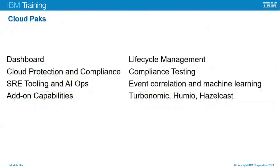The Cloud Pack for Multicloud Management is an IT management platform providing full visibility and control wherever workloads are running. Features include a dashboard to monitor application lifecycle and management, deploy and move applications across clouds, cloud protection and compliance for automated policy enforcement and compliance testing, and SRE tooling and AIOps for event correlation and machine learning to improve operational efficiency. Add-on capabilities from IBM partners include Turbonomic, Sysdig, Umeo, and Hazel Cost.